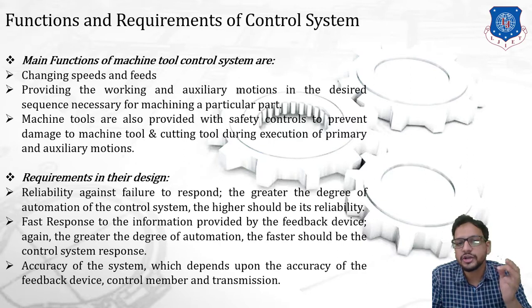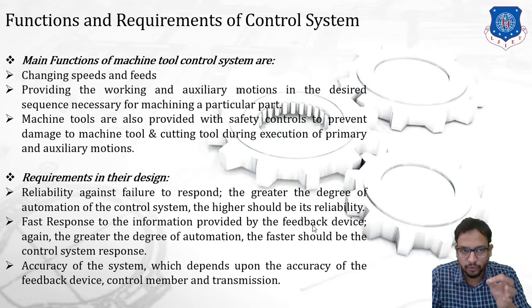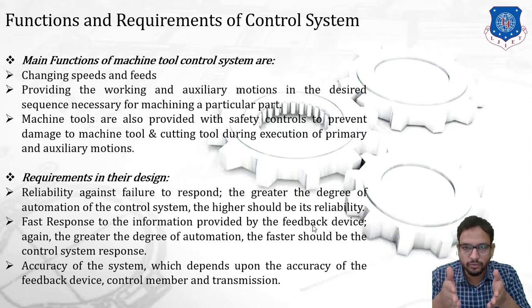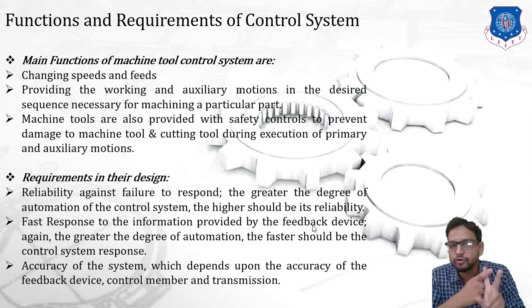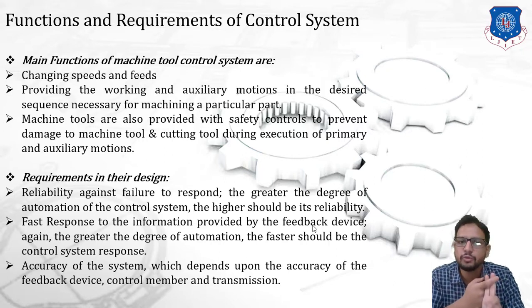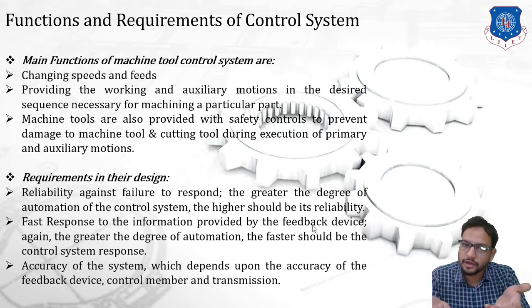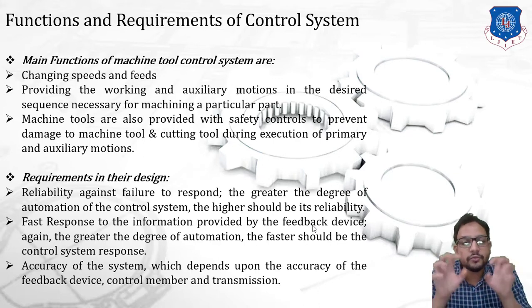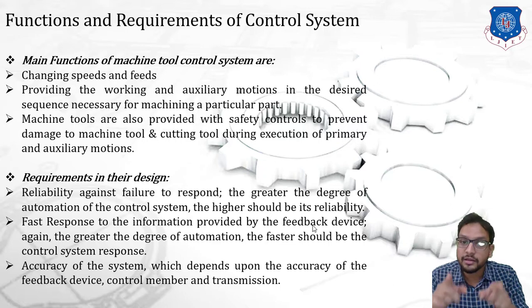Now let us see the functions and requirements of a control system. There are three main functions. First, it is used for changing speeds and feeds. Second, for providing the working and auxiliary motions in a desired sequence necessary for machining a particular part. The working motions include the primary cutting motion and feed motion. Auxiliary motions include the clamping or unclamping of a workpiece and cutting tool. The sequence in which these motions are operated is controlled by the control system.